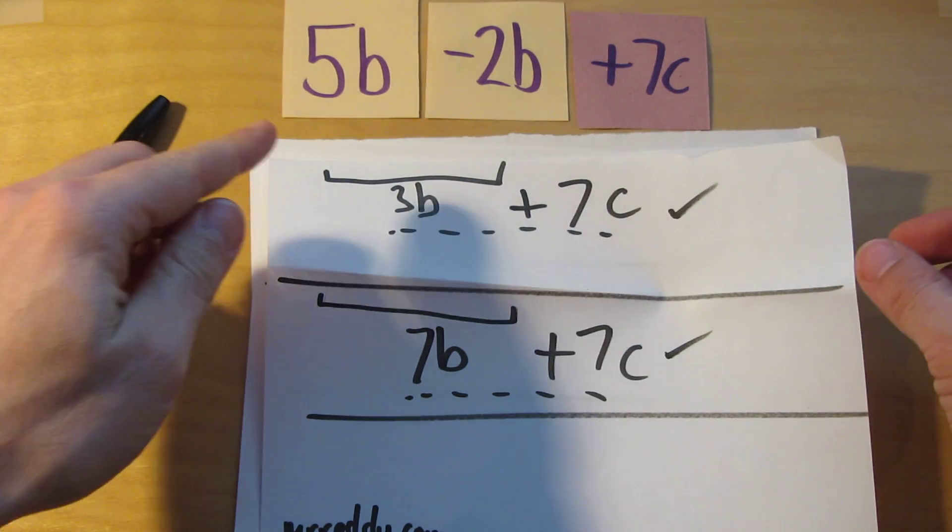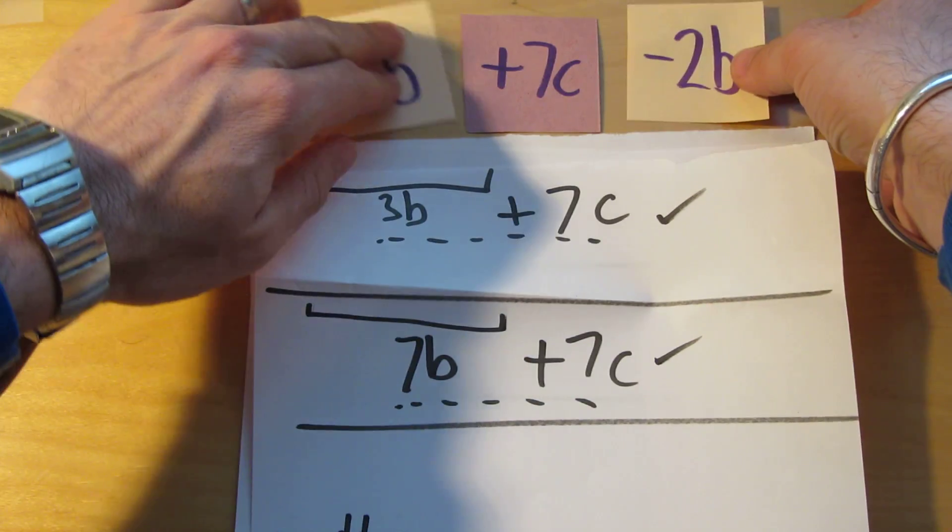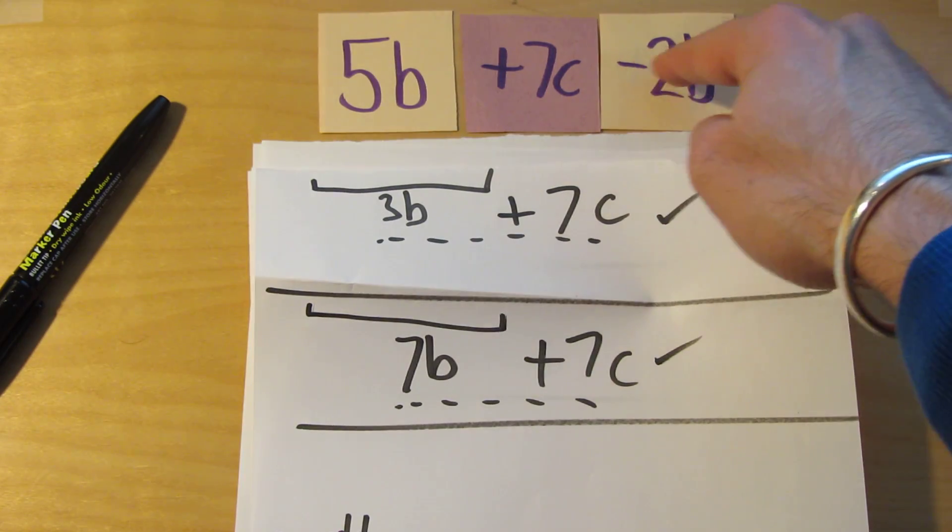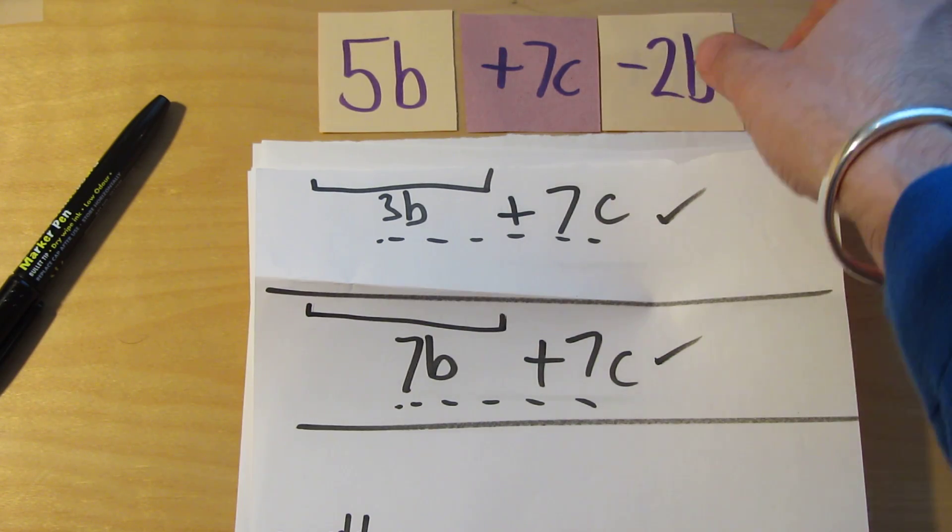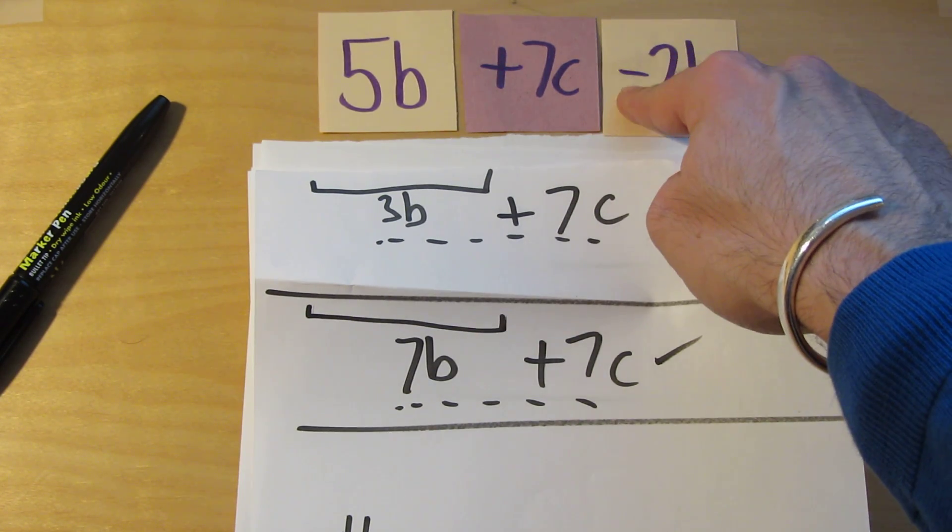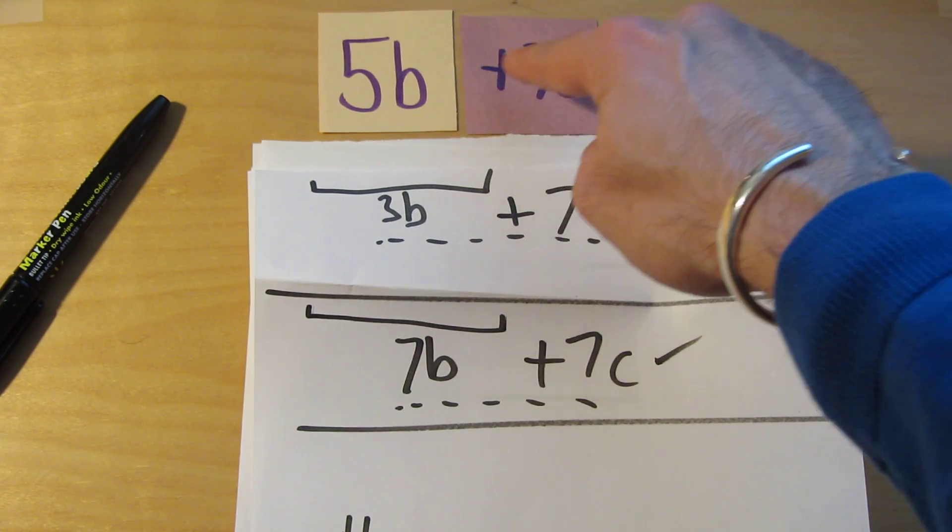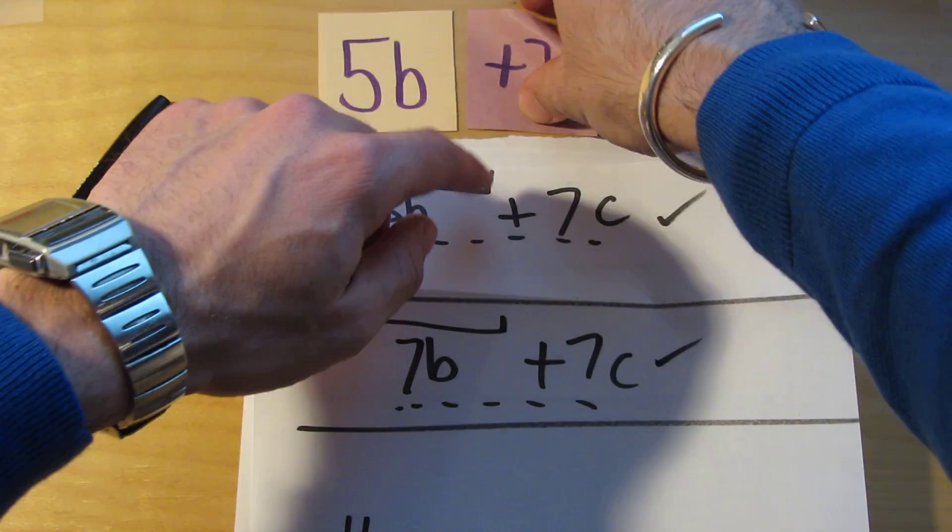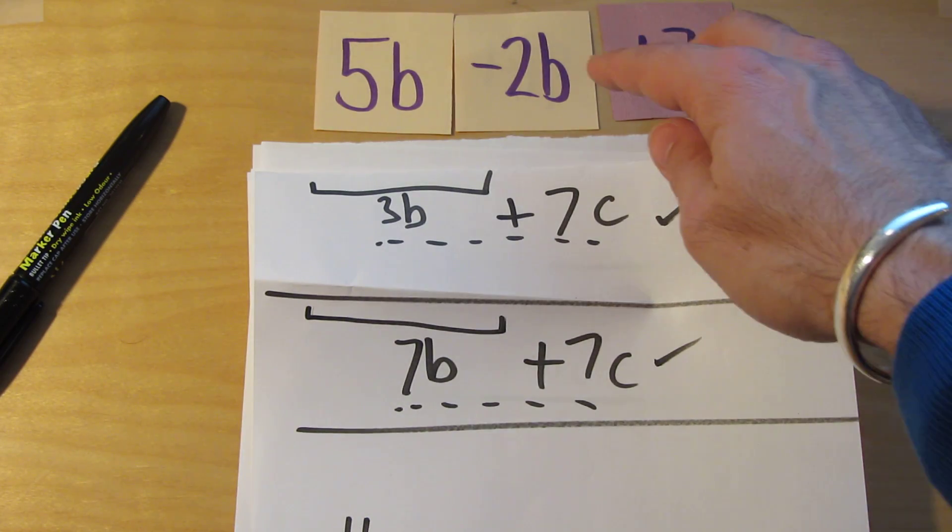The special thing to point out is that when I move them the sign to the left of the coefficient, the sign to the left of the variable goes with it. So in this case the sign to the left of 2b is take away and here the sign to the left of the 7c is plus. And the plus went with the 7c and the takeaway went with the 2b. Okay really really important.